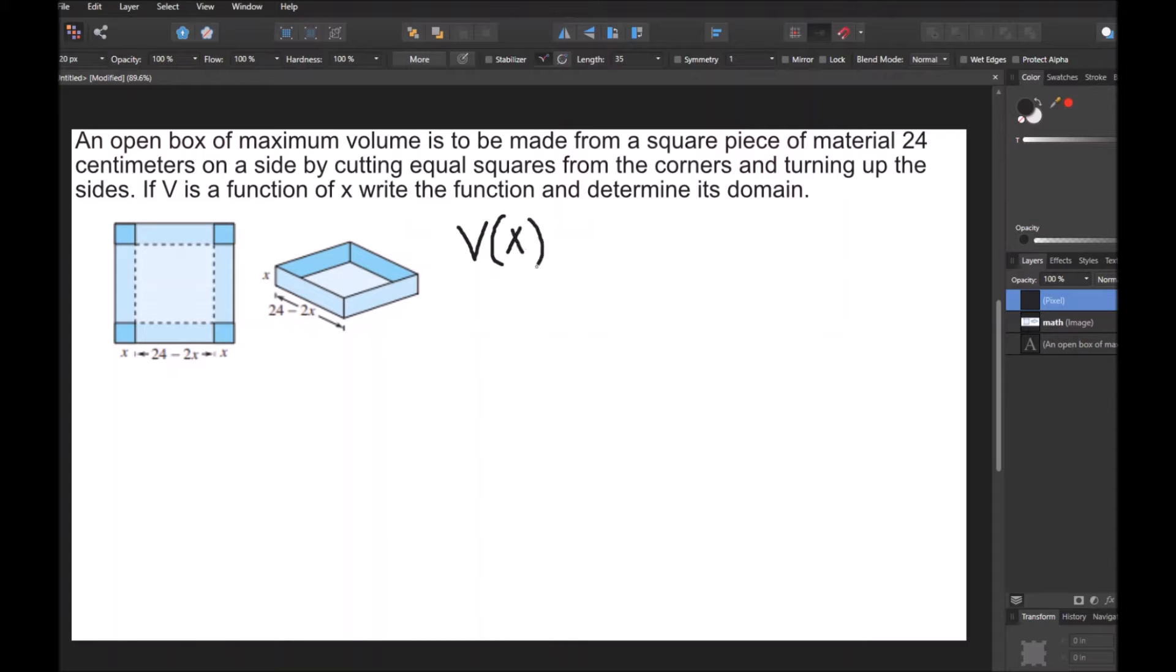So they want us to write the volume as a function of X. Well, we know that the volume is the length times the width times the height. My height I'm going to define as this side length here, which is just X. My length is going to be this side length here, which is 24 minus 2X because of this diagram here. It says that the side length is going to be 24 minus 2X because this side length X and this side length X will be cut out.